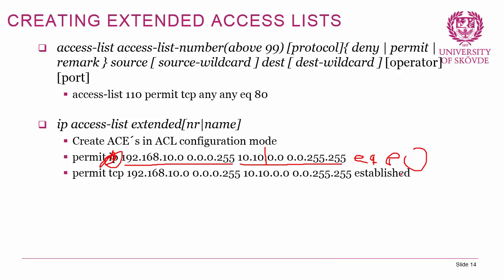You can also use 'permit tcp [source] [destination] established', which is a special case that tracks TCP sessions. It allows return traffic for established sessions from your inside network communicating with the outside world. This is somewhat beyond the scope of this course, so let's move on to how we apply ACLs to interfaces.